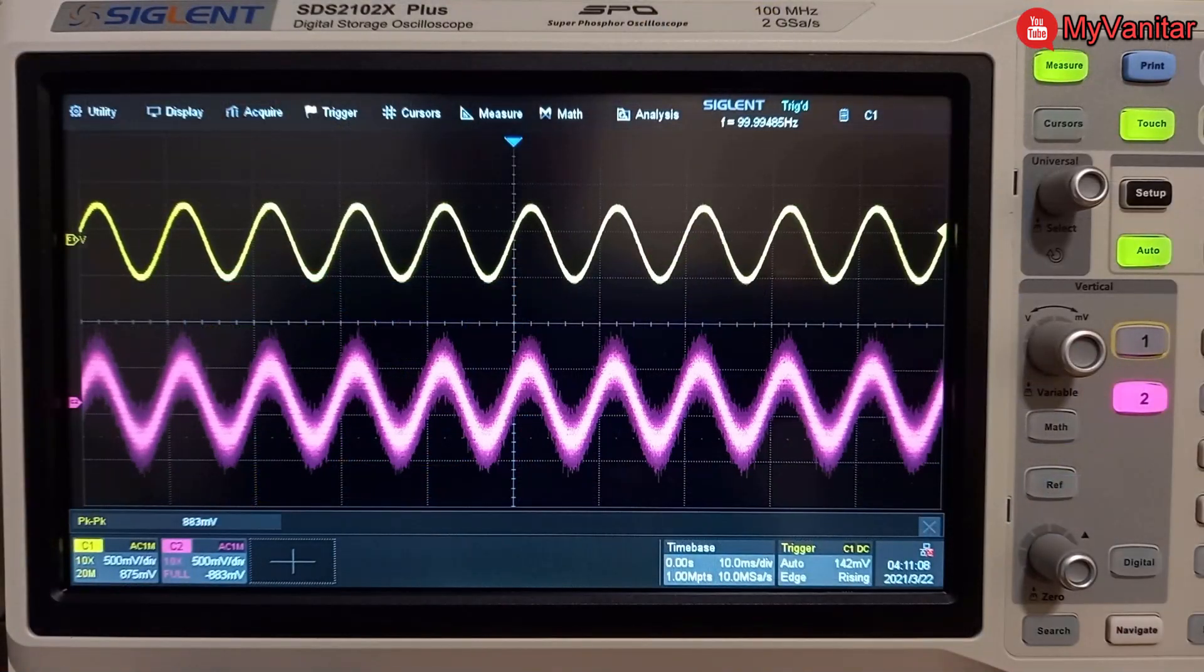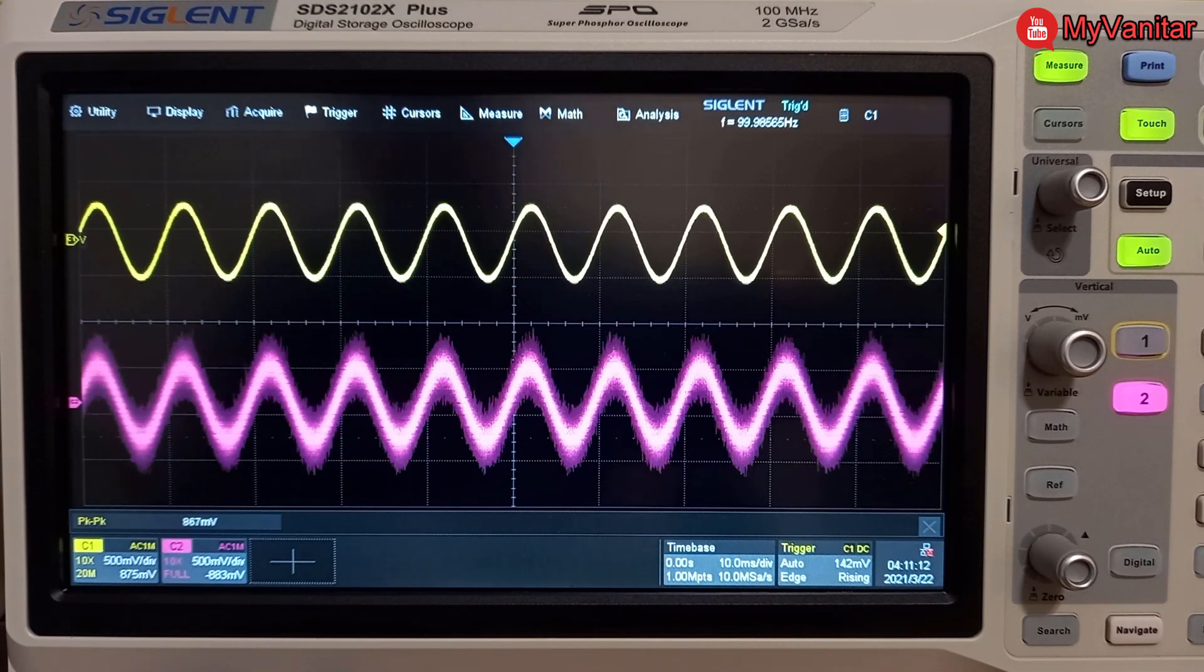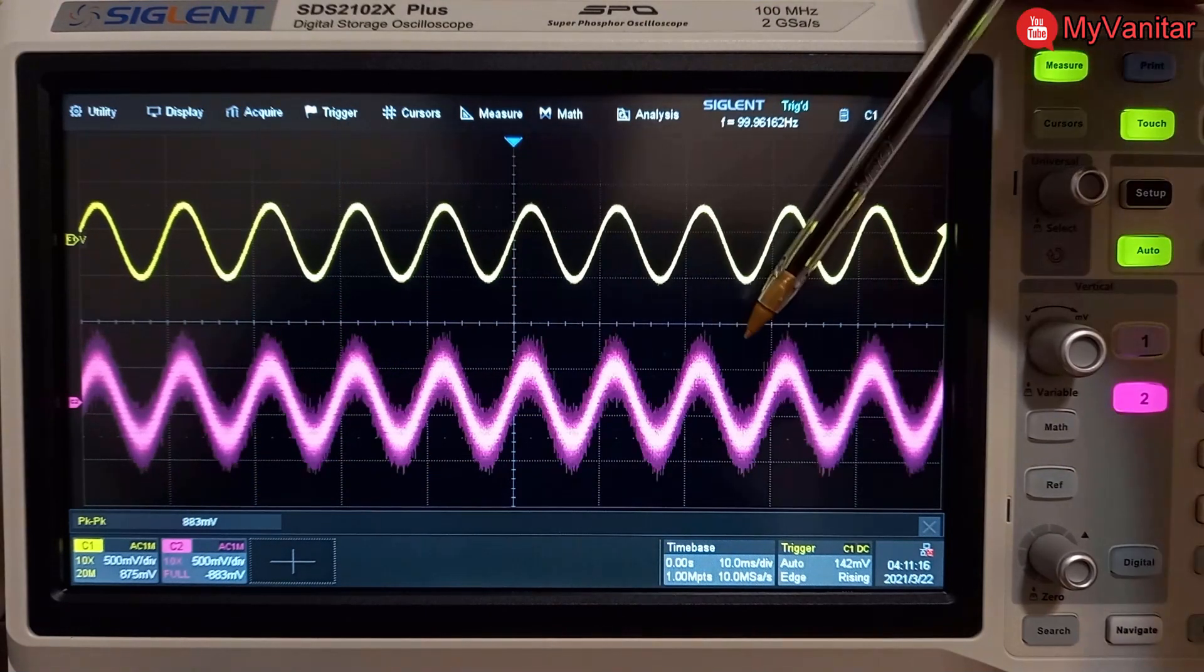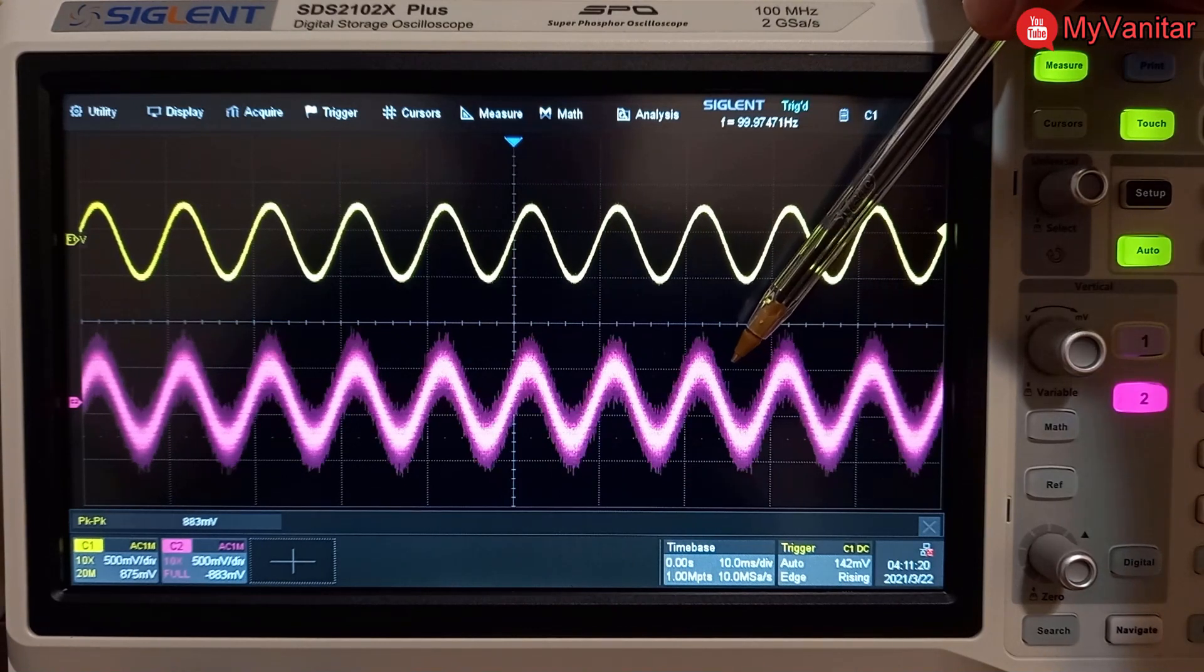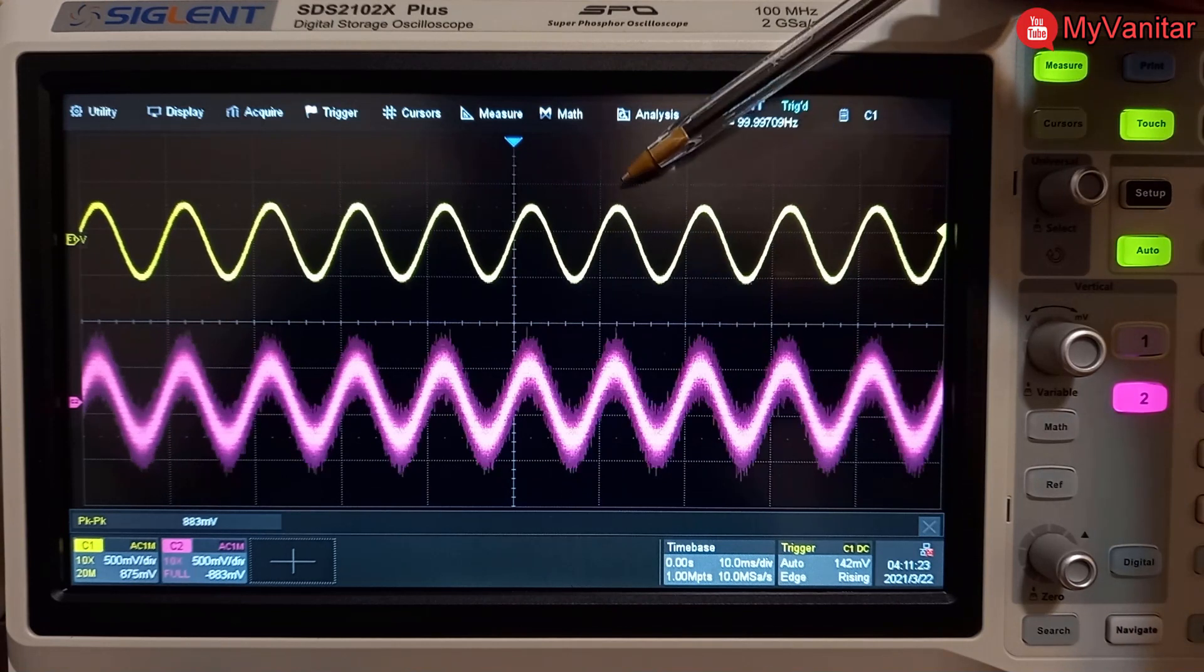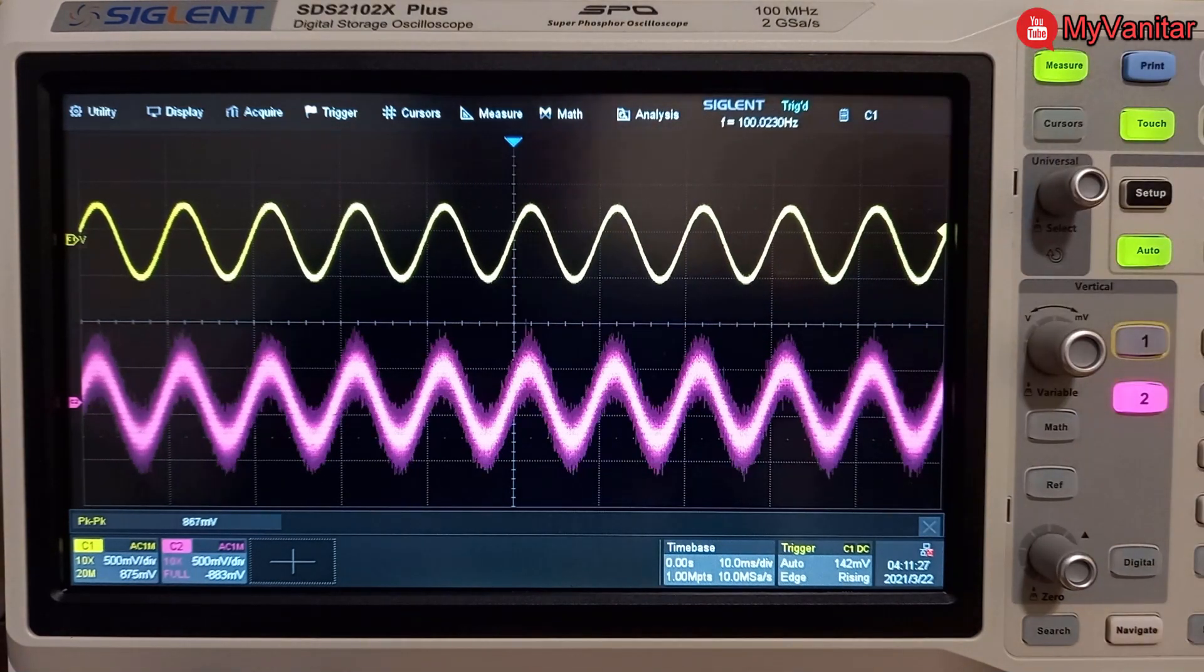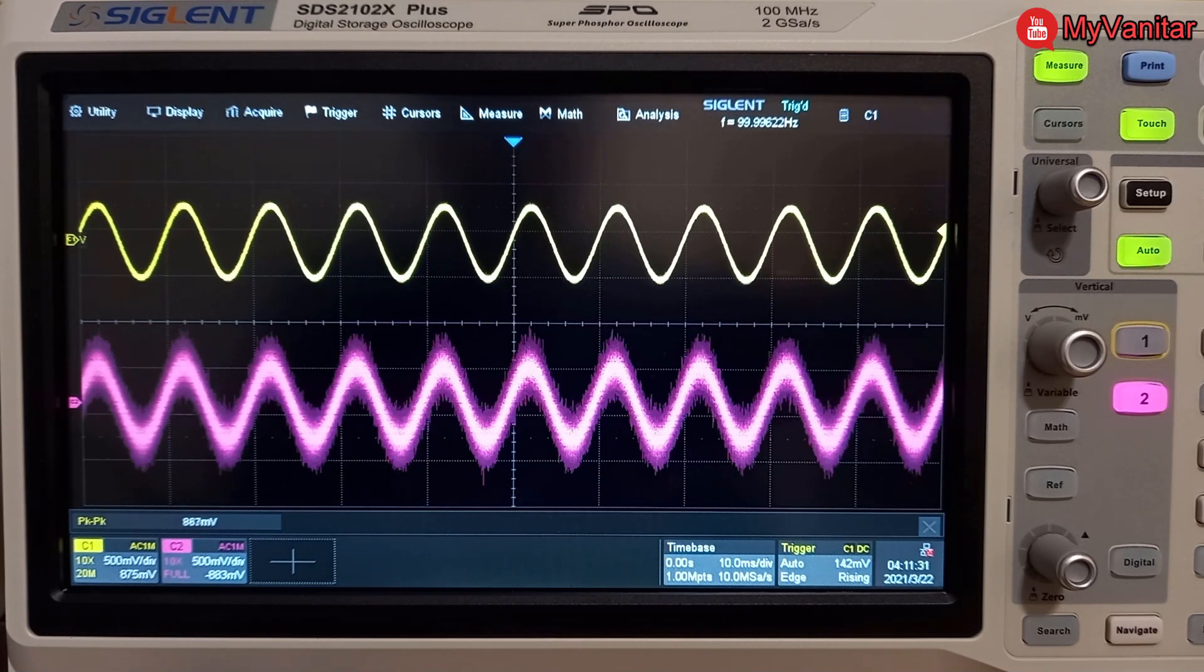Okay, now you can see the oscilloscope screen clearly. I use Siglent SDS-2102X Plus oscilloscope. This purple signal on channel 2 shows the input signal, and this yellow one shows the output signal. Everything is clear. You can see the filter's behavior in practice, how much noise is in the input and how clear is the output.